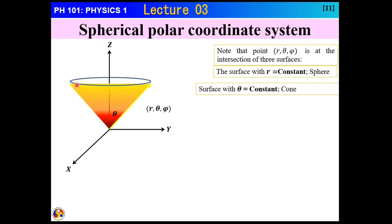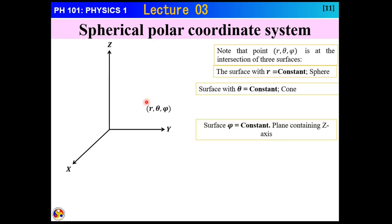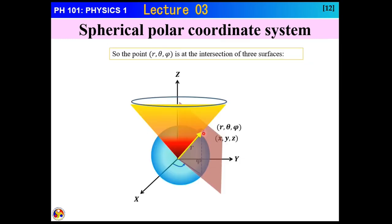All points on the conical surface have the same theta. The third surface, phi equal to constant, is a plane that contains the z-axis at angle phi. Point P is on the intersection of these three surfaces — a sphere, a cone, and a plane.